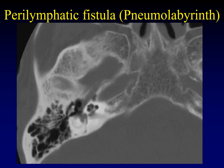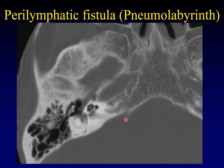Perilymphatic fistula is another potential complication of otic capsule-violating fractures. When you fracture between the middle ear, which contains air, and the inner ear, which contains endolymph and perilymph, they can leak into each other. You can get perilymph and endolymph in the middle ear where it reabsorbs, and gas can enter the membranous labyrinth. This is referred to as pneumolabyrinth — you can see the cochlea filled with gas rather than fluid, because the normal endolymph and perilymph have leaked out.